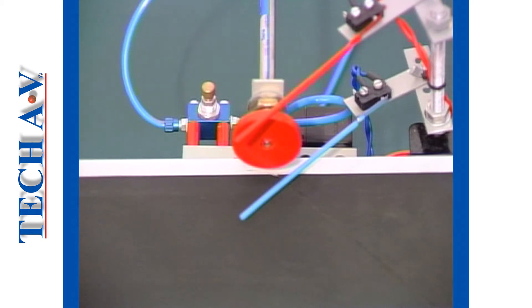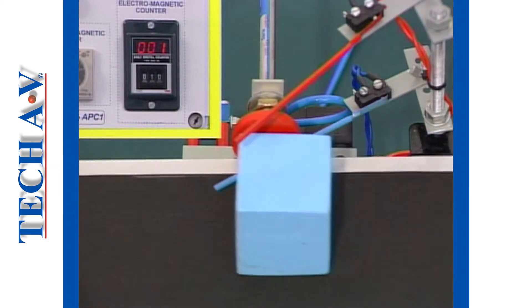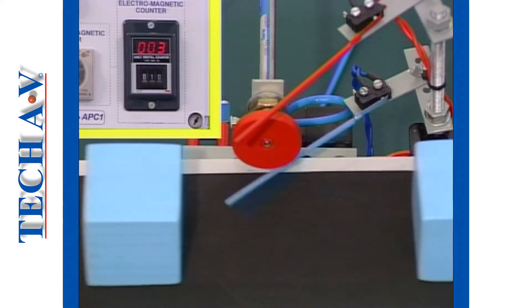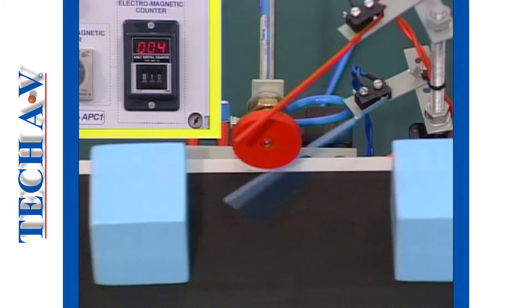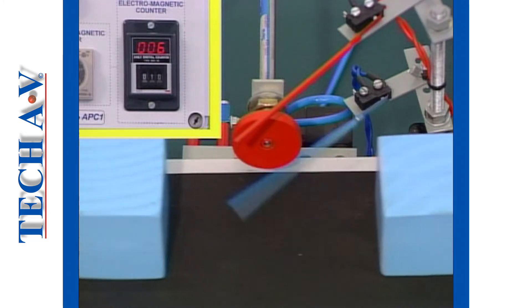So, we'll position another normally open limit switch just above the conveyor and connect it to an electrically operated counter. Now, each time the lower limit switch is activated, it closes, sending a yes signal to the counter.